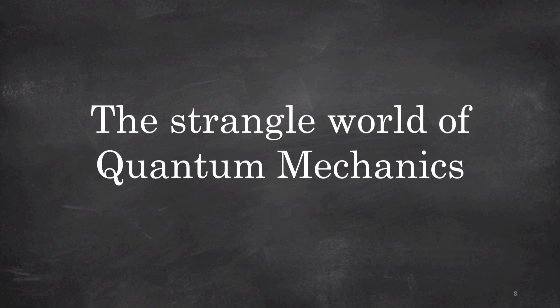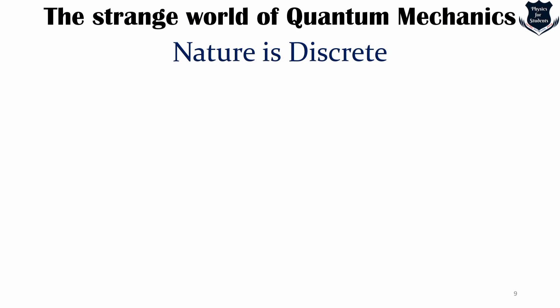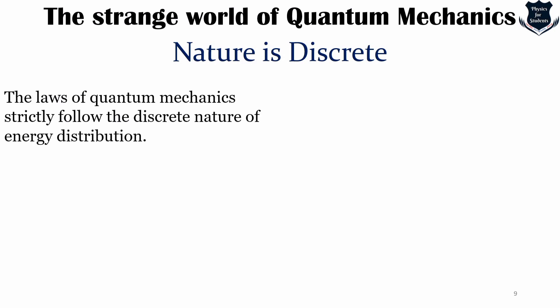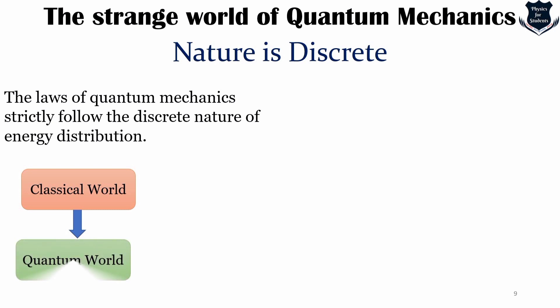Quantum mechanics — which is even stranger than general relativity — has very strange phenomena. These are things which baffle and confuse us, not matching the common sense understanding we have. The first strange phenomenon is that nature is discrete. The laws of quantum mechanics strictly follow the discrete nature of energy distribution. In the classical world, if we take a spring we can put as much energy as we want — but in the quantum world we cannot. Nature restricts us to only certain amounts.